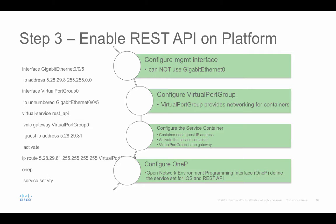Then we configure the service container. The name of the service container can be any name — in this example, I give the name REST_API. The container needs a guest IP, which is the IP address used to communicate with by the client. We configure the virtual port group as the gateway for the service container, and then we activate the service container. We also configure a static route on the guest IP, which is the service container IP address, with virtual port group 0 as the gateway.